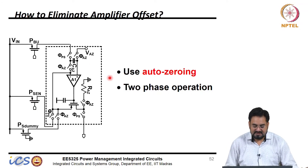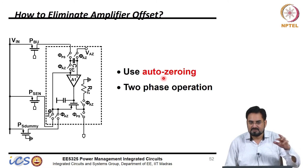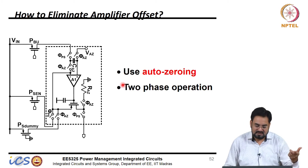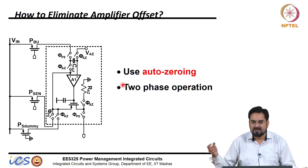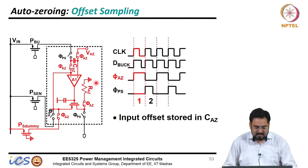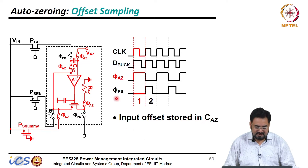In order to eliminate the offset we use an auto-zero technique, which we already talked about in the context of zero-cross detection. We did that with an inverter, but the concept remains the same. You connect unity feedback to sample the offset, and after that you subtract it from your input and it gets cancelled out. It is a two-phase operation: the input offset is stored in a capacitor in one phase and cancelled out in the next phase.